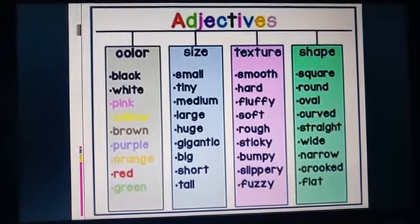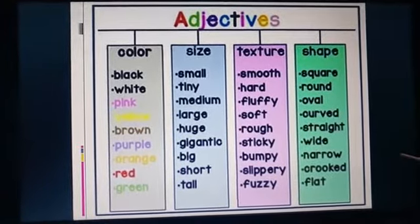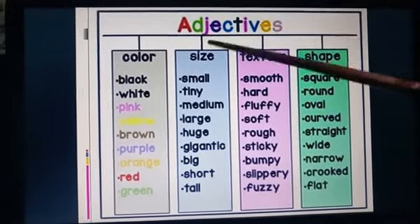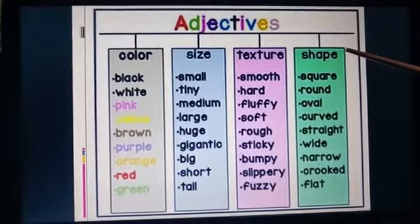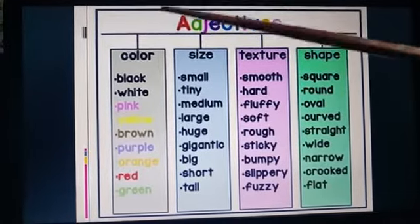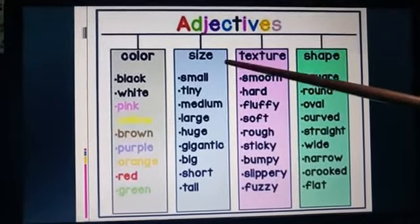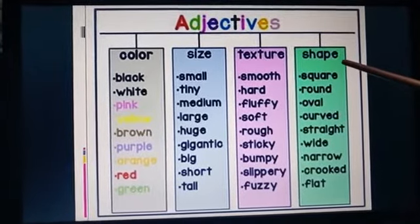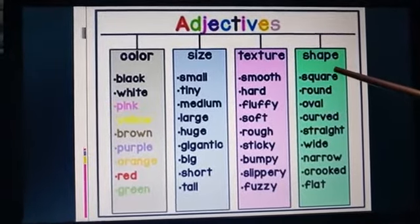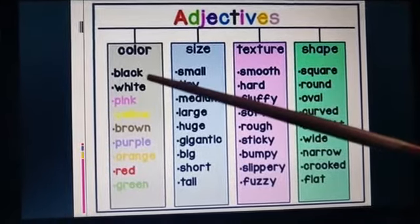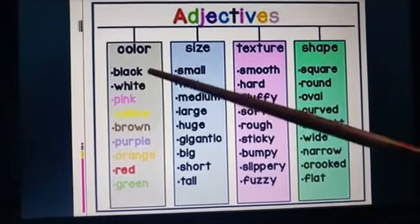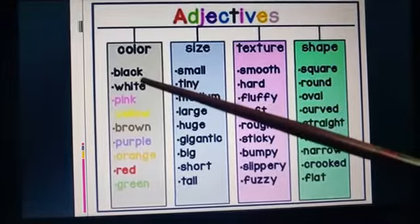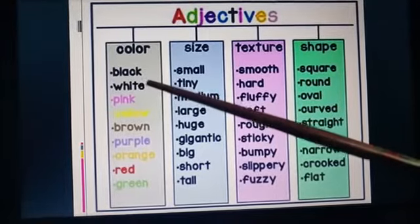When we see this slide, we can see that adjectives are categorized into four parts: first is color, second is size, third is texture, and the last is shape. If we take an example of color — my hair are black in color — so the word black is an adjective.